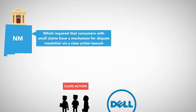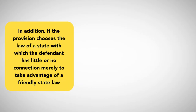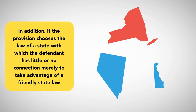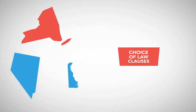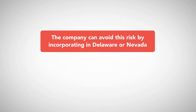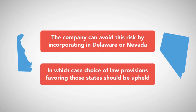In addition, if a choice of law provision chooses the law of a state with which the defendant has little or no connection merely to take advantage of a friendly state law — such as a business incorporated and doing business in New York choosing the laws of corporate-friendly states like Delaware or Nevada — it is at risk of being struck down. The company can avoid this risk by actually incorporating in Delaware or Nevada, in which case choice of law provisions favoring those states should be upheld.